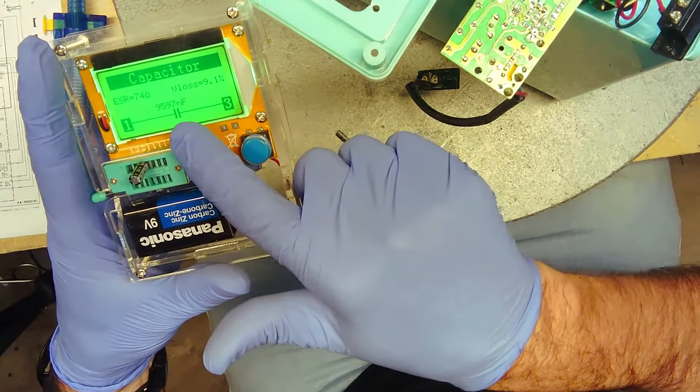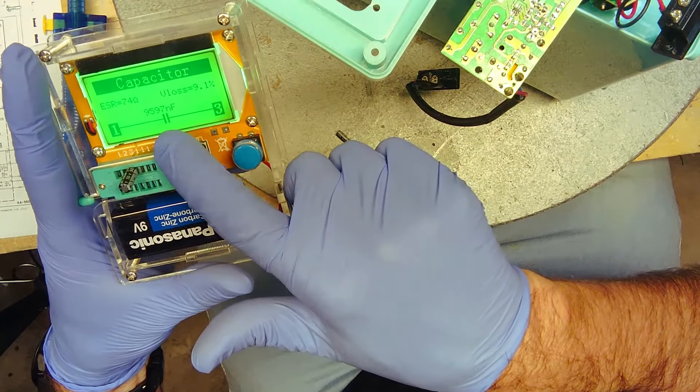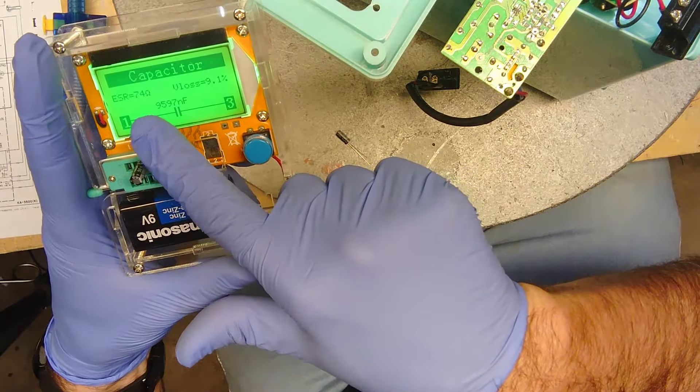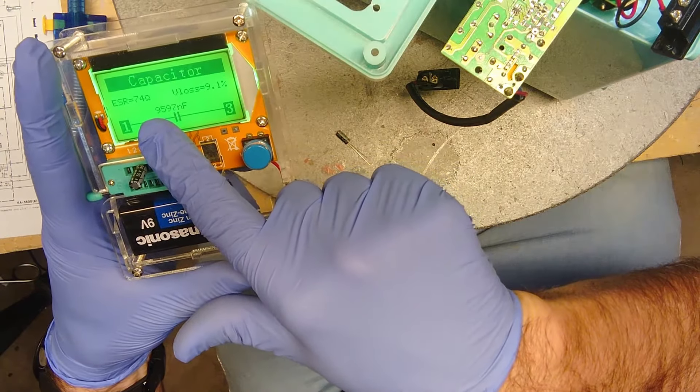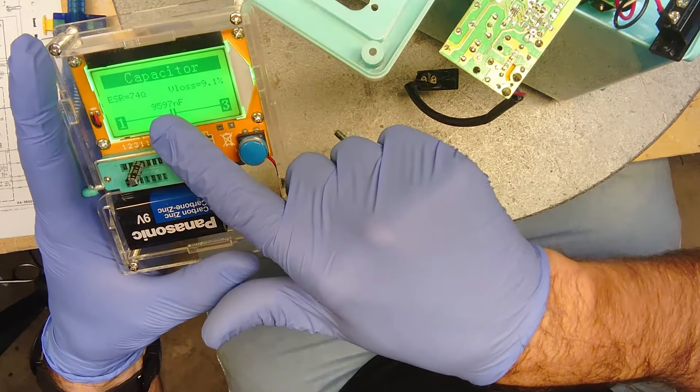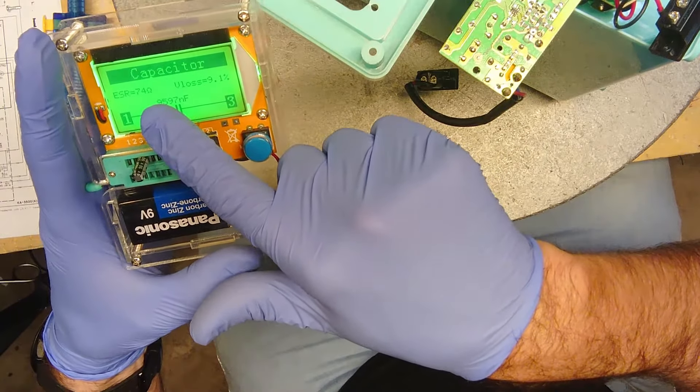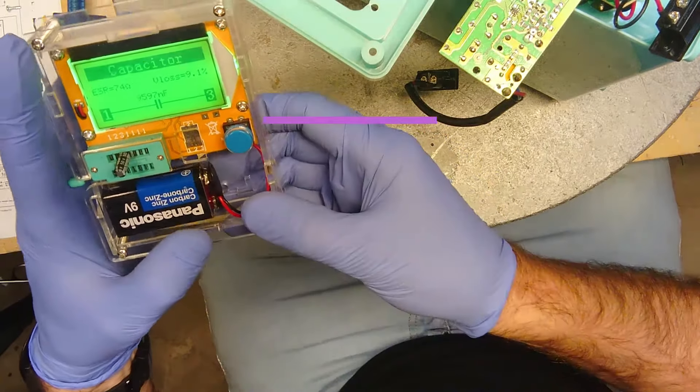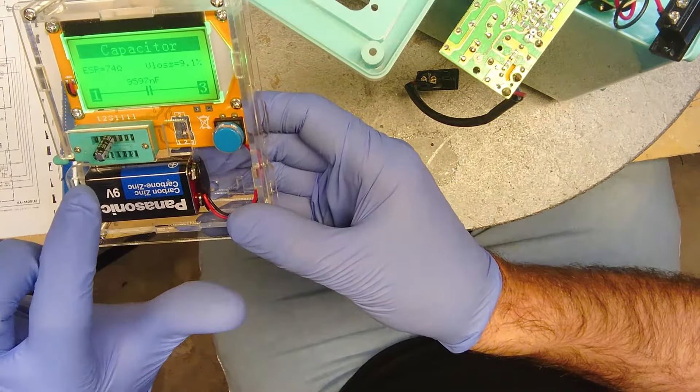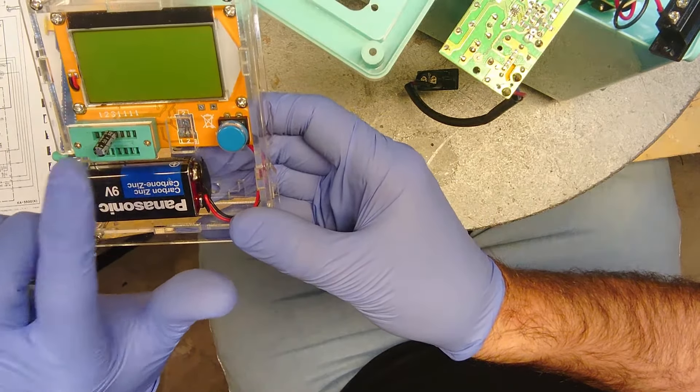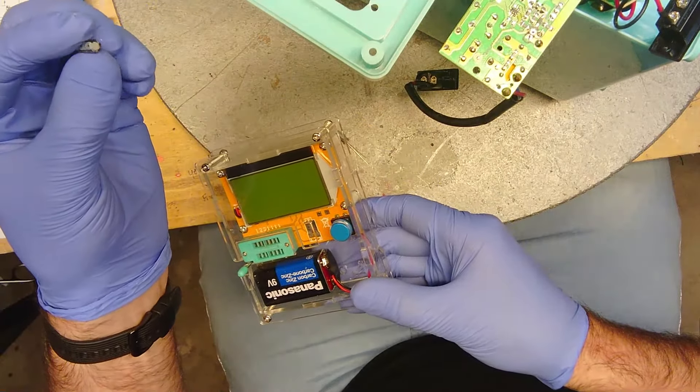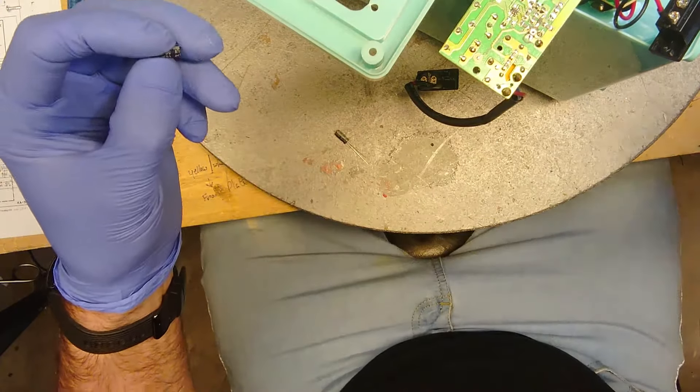Let's test this. It should be a 10uF, which it is. The voltage loss is 9.1 and look at the ESR: 74 ohms. This capacitor should only be around maybe 1 ohm at the most. I believe 100% this capacitor was the cause of all the issues.